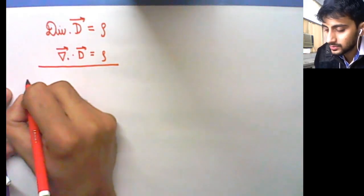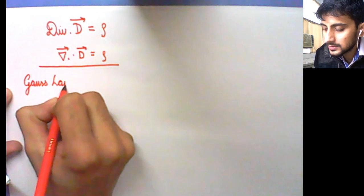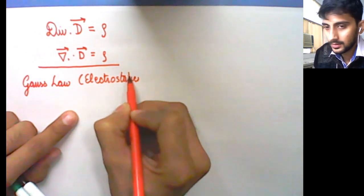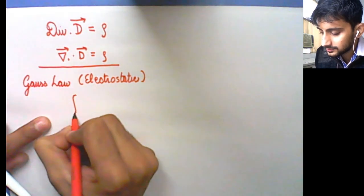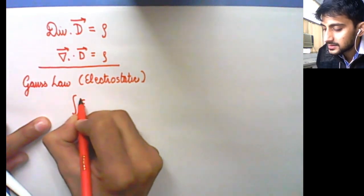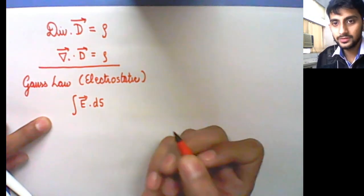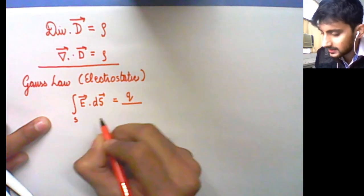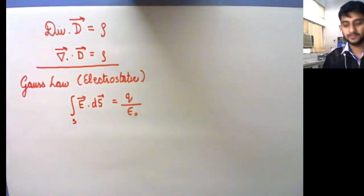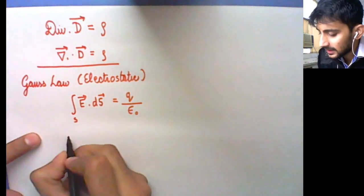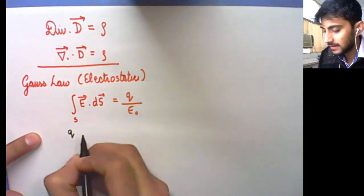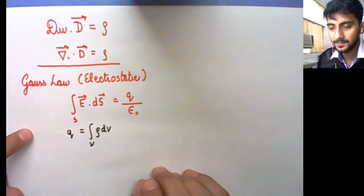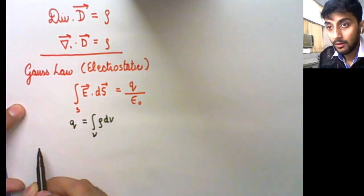We will start with what we already know. From Gauss's law in electrostatics, the surface integral of electric field over a closed surface area S equals the charge enclosed inside that closed surface divided by epsilon naught. We then assume that charge Q can be written as a distributed charge, rho dV, distributed over the volume enclosed by surface S.